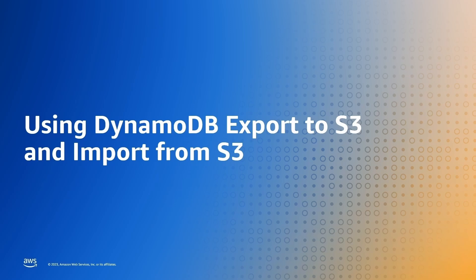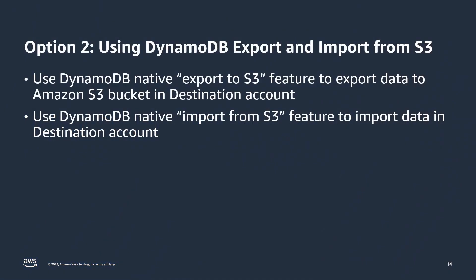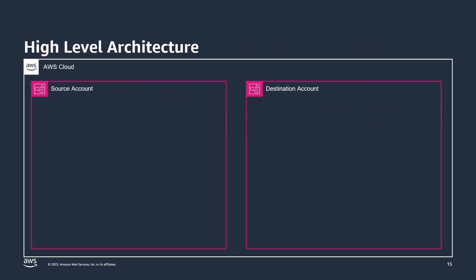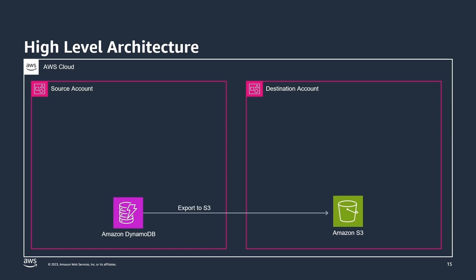Now let's explore the second option to migrate your DynamoDB table between AWS accounts. We can use the DynamoDB export to S3 and import from S3 feature for this. First, we use DynamoDB's native export to S3 feature to export data from the DynamoDB table in the source account to an Amazon S3 bucket in the destination account. Then we use DynamoDB's native import from S3 feature to import data into a new DynamoDB table in the destination account.